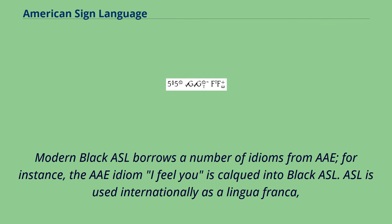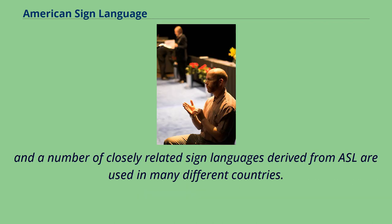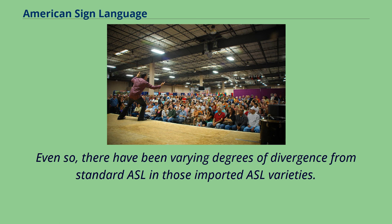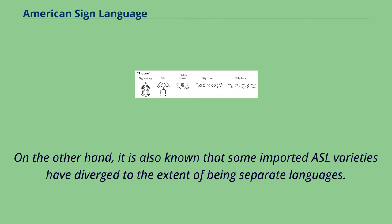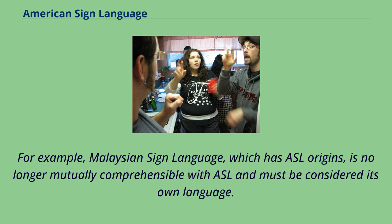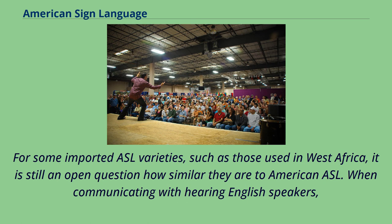ASL is used internationally as a lingua franca, and a number of closely related sign languages derived from ASL are used in many different countries. Even so, there have been varying degrees of divergence from standard ASL in those imported varieties. Bolivian sign language is reported to be a dialect of ASL, no more divergent than other acknowledged dialects. On the other hand, some imported ASL varieties have diverged to the extent of being separate languages; for example, Malaysian sign language, which has ASL origins, is no longer mutually comprehensible with ASL.